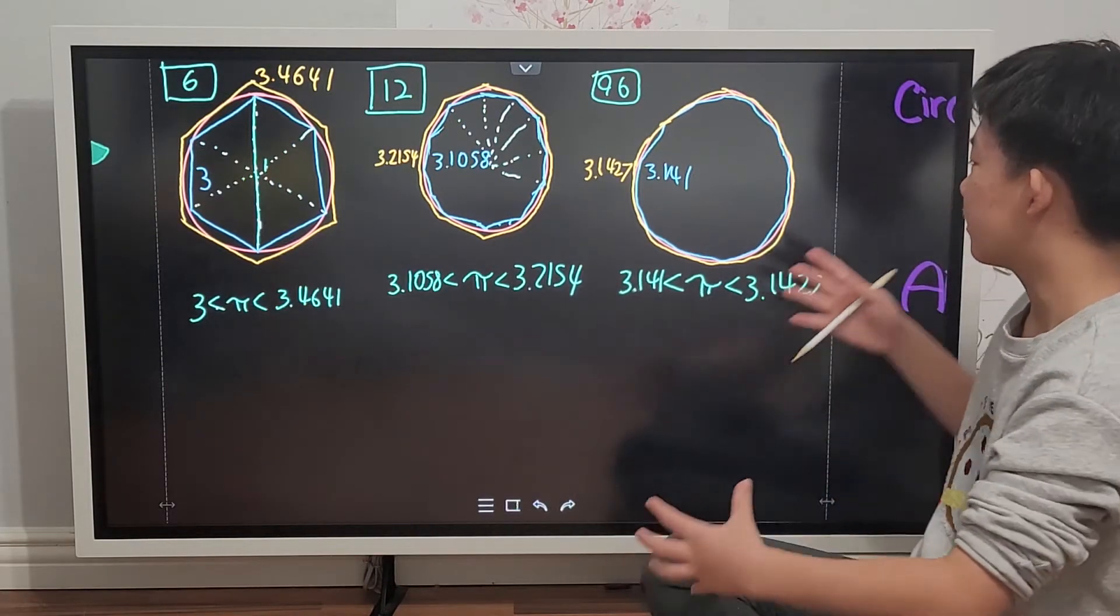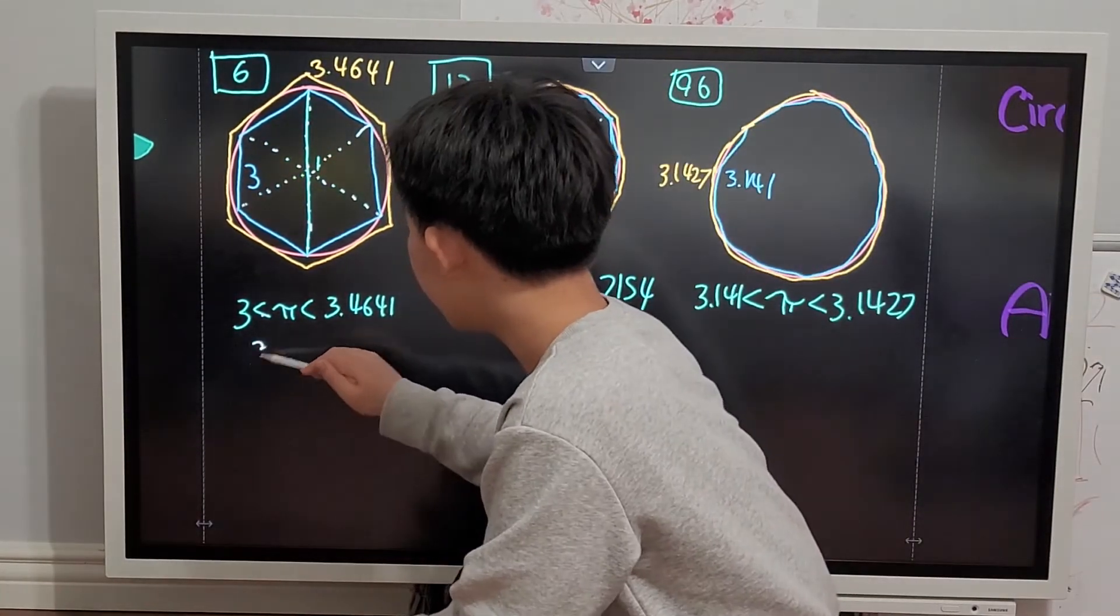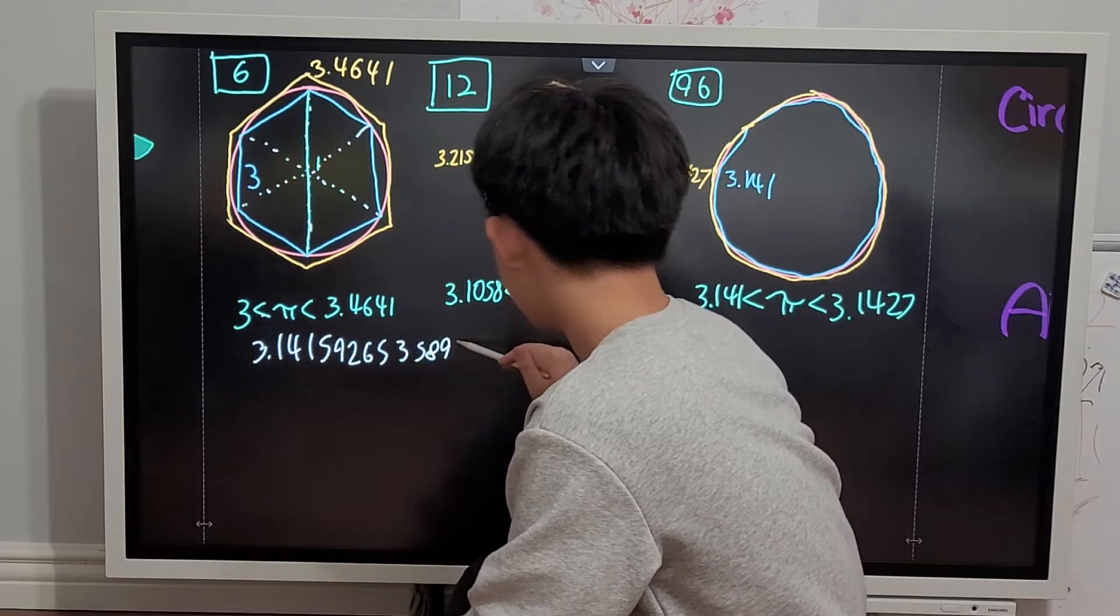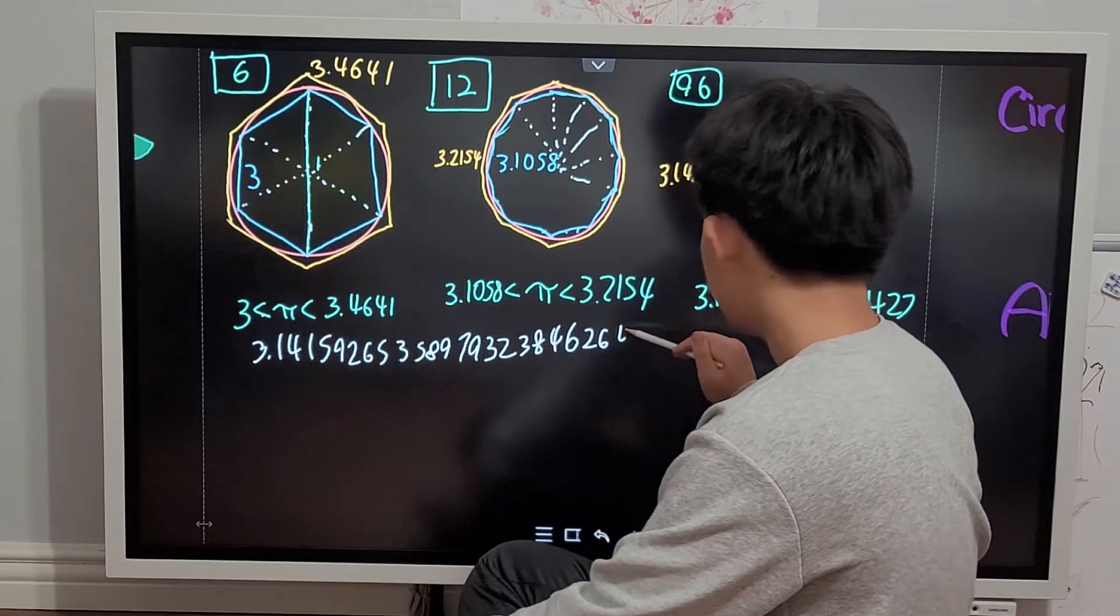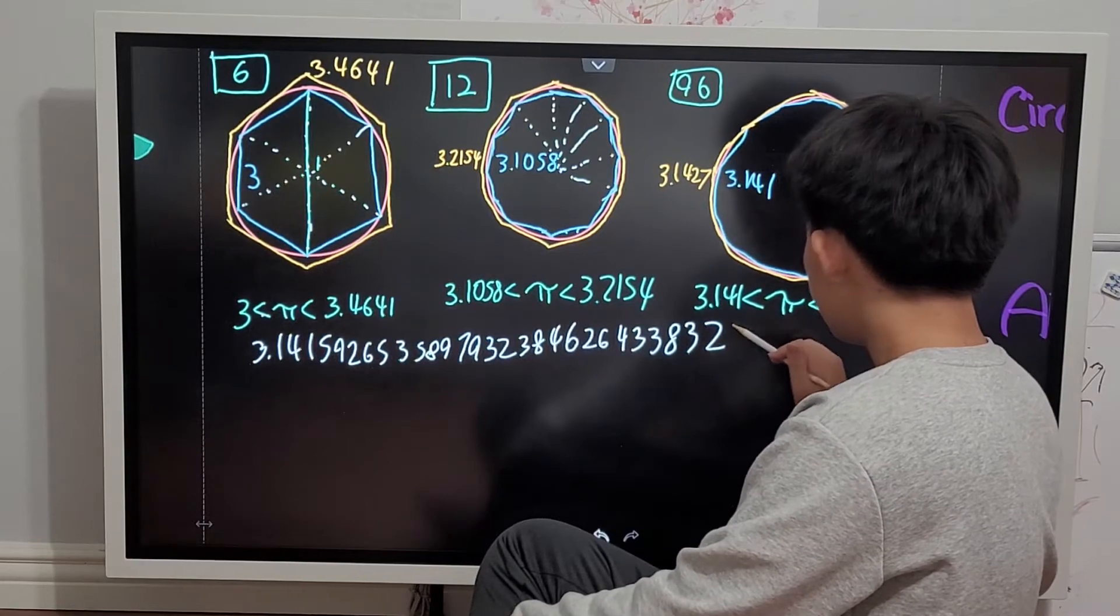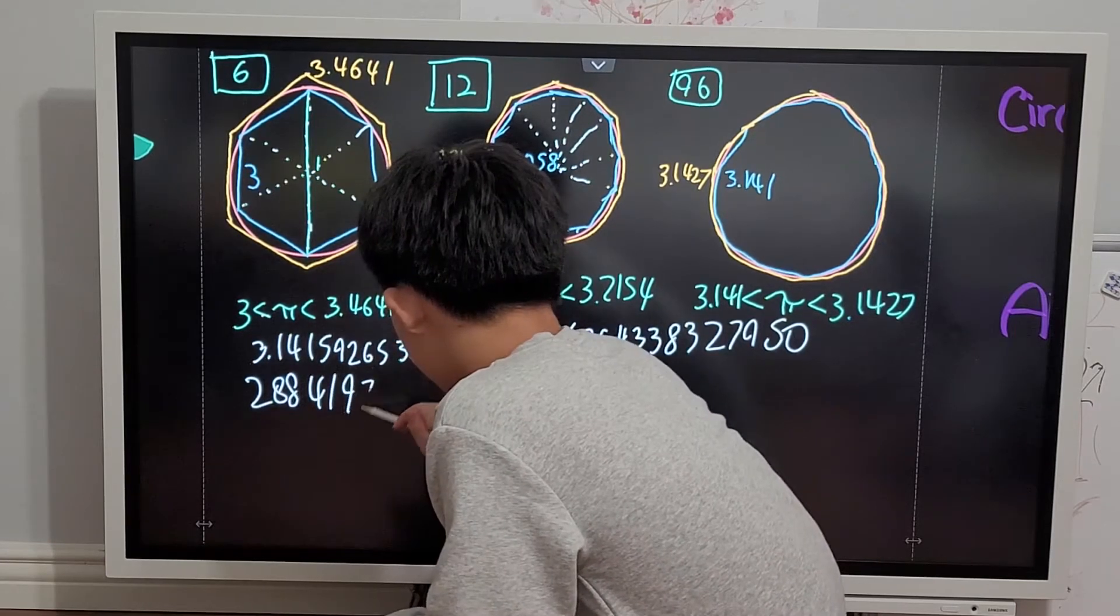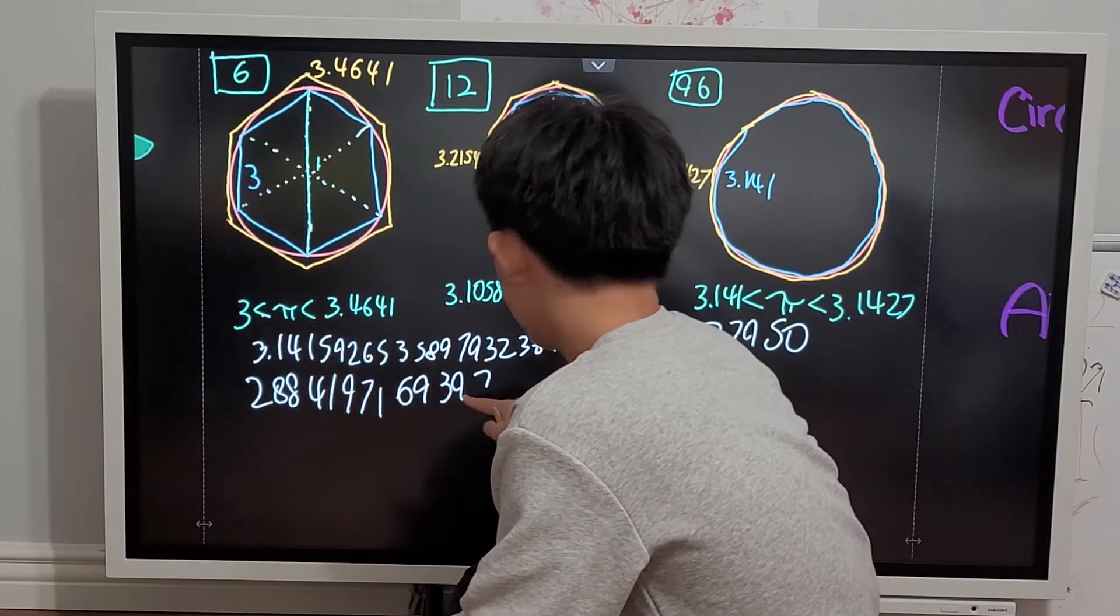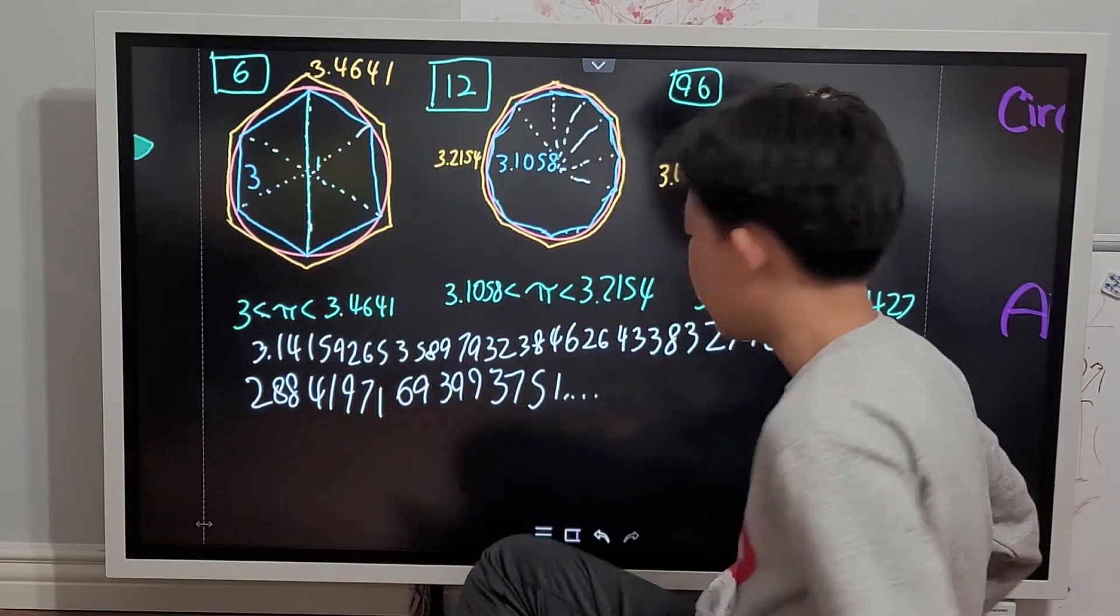So eventually as you continue this process, you get today's value of pi, which is 3.14159265358979323846264338327950288419716939937510, etc.